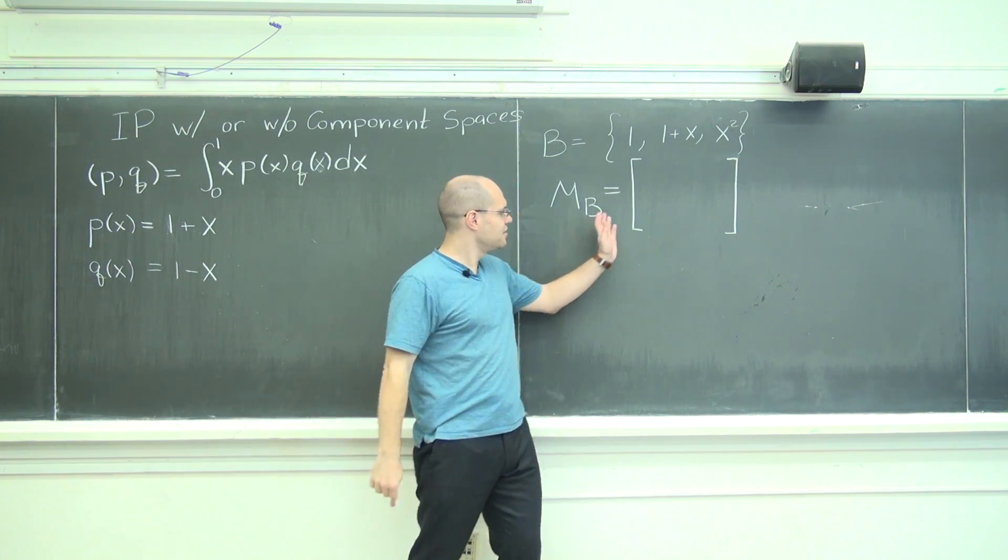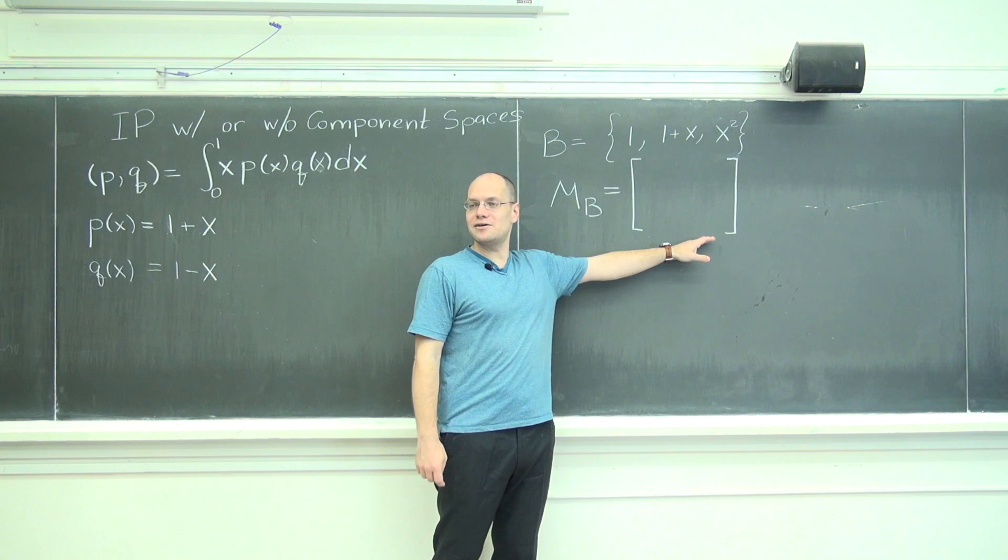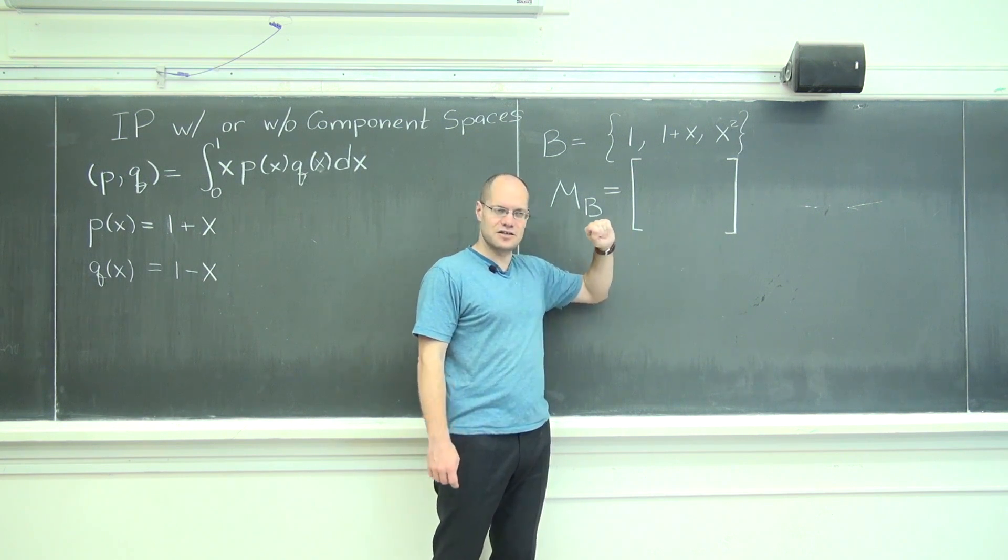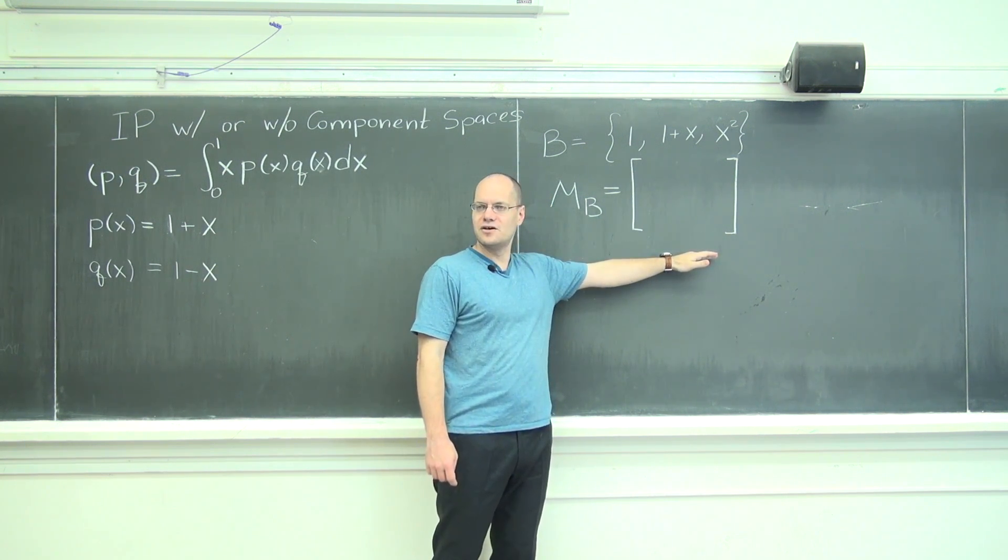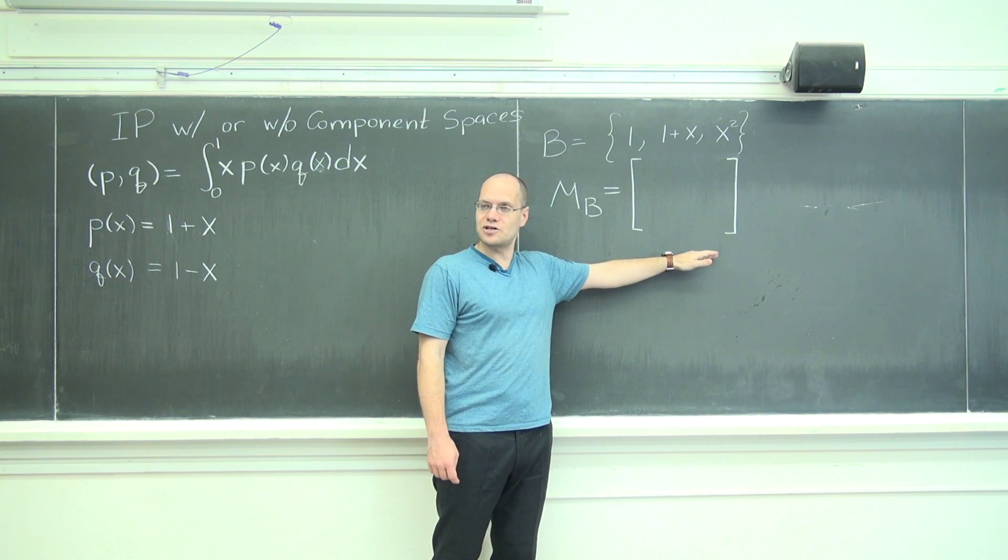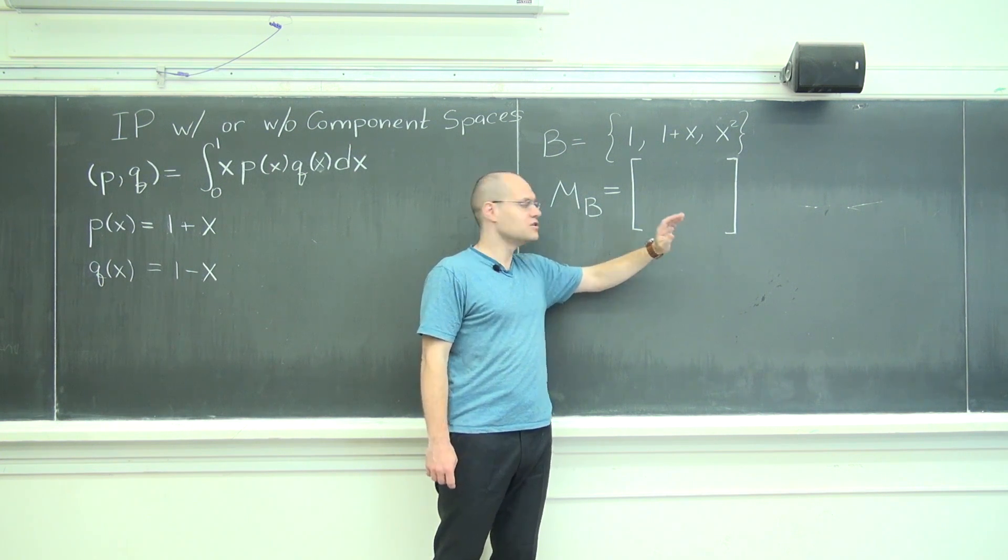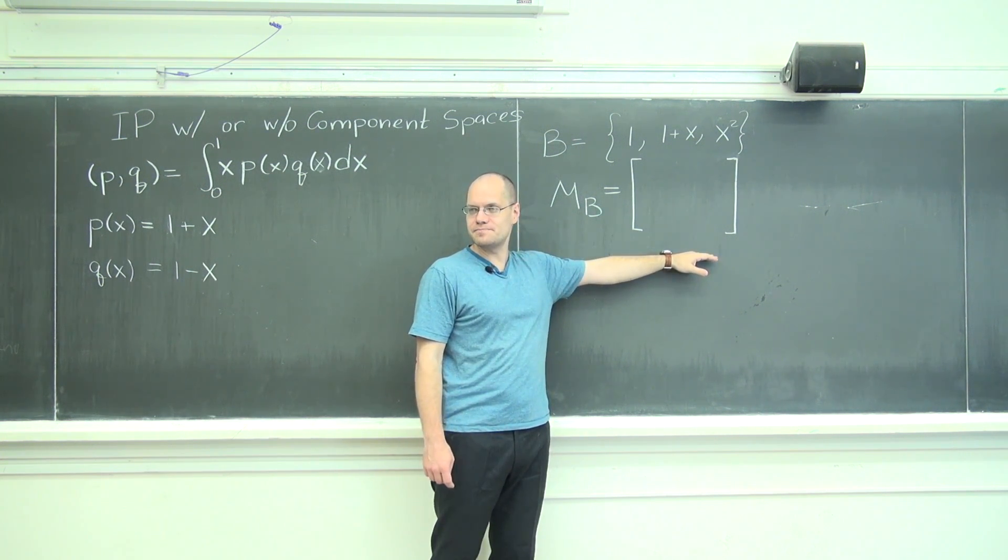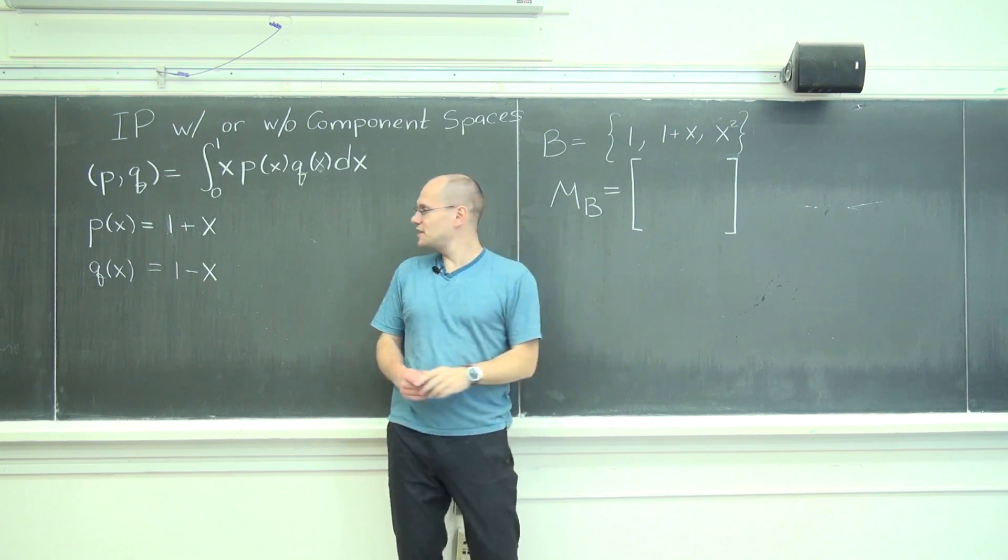And so you end up with matrices that are 1,000 by 1,000. And in any case, there's lots of reasons to, in some circumstances when they call for it, to prefer component spaces. Okay, so here's the exercise.